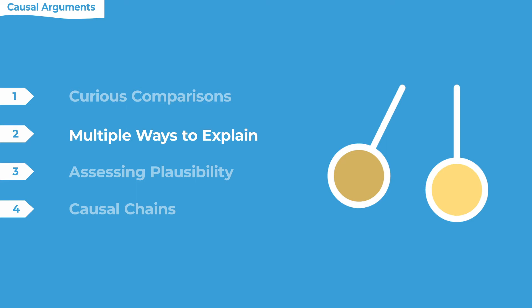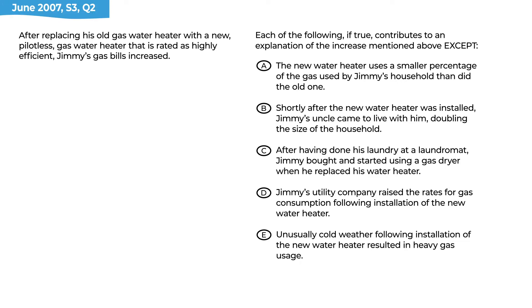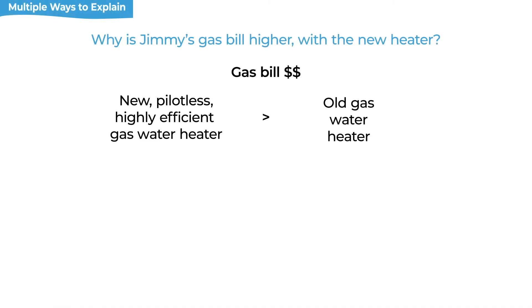Once we've asked 'why is that,' our human brains can't help but start speculating possible explanations. This question is all about coming up with four possible explanations for the same curious fact. The correct answer is A — this actually makes it even more surprising, because it says his new water heater uses a smaller percentage of gas. So why are his gas bills going up if the new heater uses a smaller percentage? This makes us even more confused, that's why it's the correct answer. But I want to look at the four that give us different explanations.